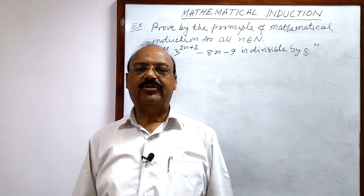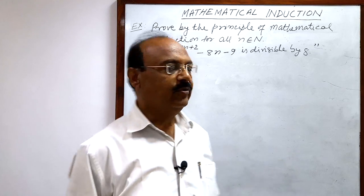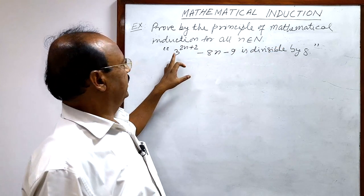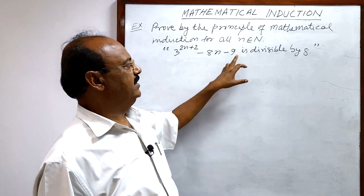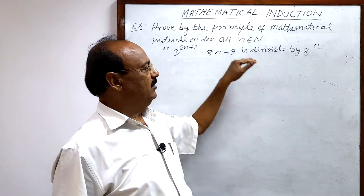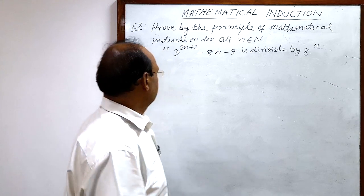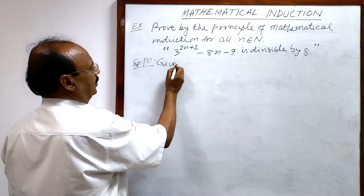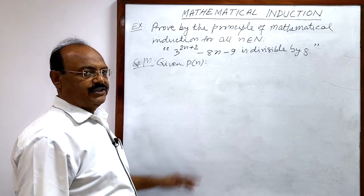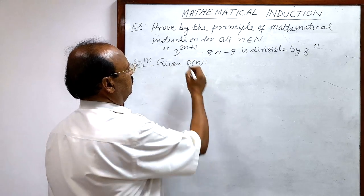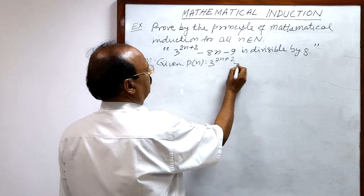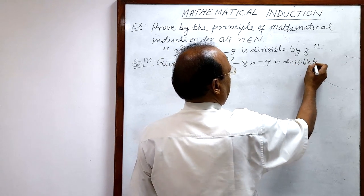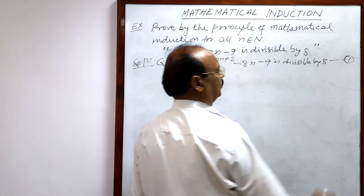Welcome students. Let us see a very interesting and important question from the chapter Mathematical Induction. The question is: prove by the principle of mathematical induction, for all n belonging to the set of natural numbers, that 3 to the power 2n+2 minus 8n minus 9 is divisible by 8.